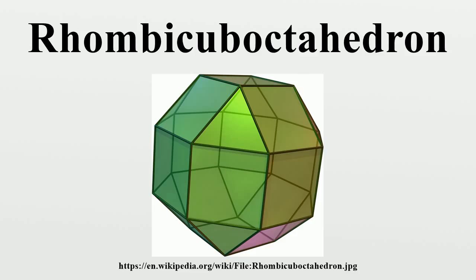The name rhombic arboctahedron refers to the fact that 12 of the square faces lie in the same planes as the 12 faces of the rhombic dodecahedron, which is dual to the cuboctahedron. Great rhombic arboctahedron is an alternative name for a truncated cuboctahedron, whose faces are parallel to those of the rhombic arboctahedron.